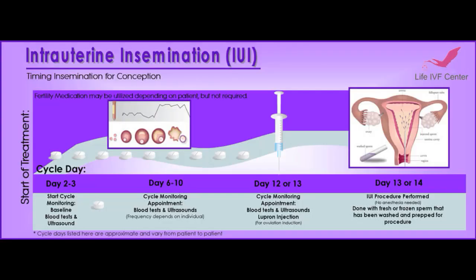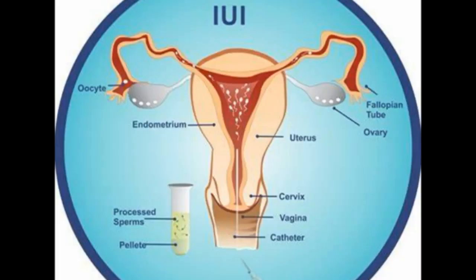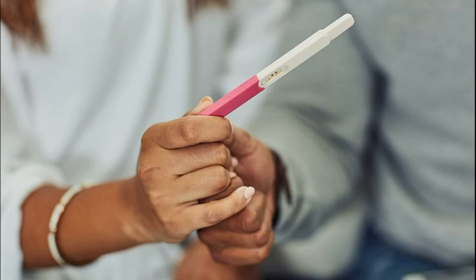During IVF, eggs are retrieved from the ovaries and fertilized with sperm in a laboratory setting. The fertilized eggs are then implanted back into the uterus with the goal of achieving pregnancy. Overall, infertility in women is a complex condition that can be caused by a variety of factors. It can have a significant impact on a woman's mental and emotional well-being. With advances in medical technology, many couples are able to achieve pregnancy and start a family.